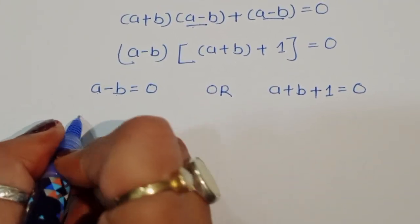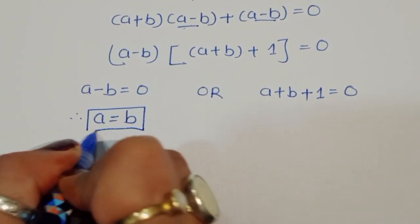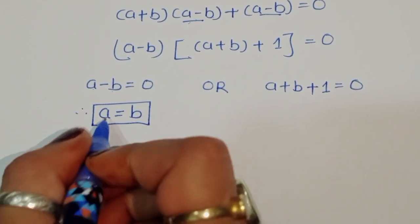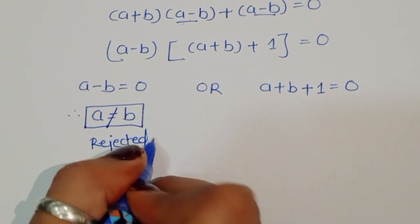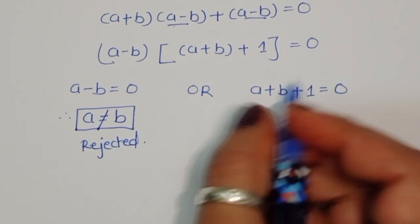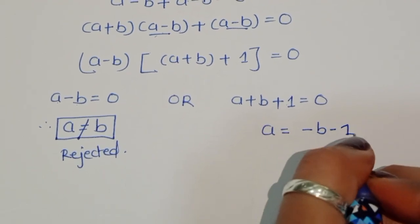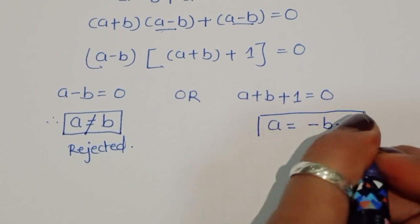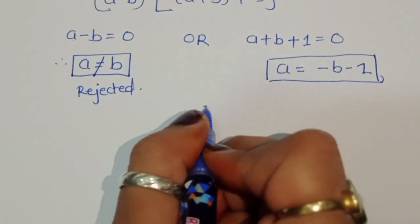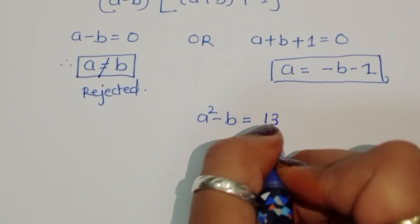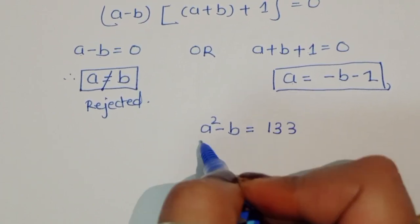From the first equation, a minus b = 0, therefore a = b. But according to the given condition, a is not equal to b, so this solution is rejected. Taking the second equation, a + b + 1 = 0, we get a = minus b minus 1. This is the value of a. Now substituting into equation 1, a² minus b = 133.